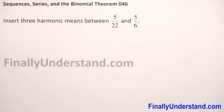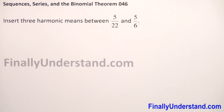Why? Because a sequence is called a harmonic progression if the reciprocals of each term form an arithmetic progression. We don't have a formula for the nth term of a harmonic progression, so that's why we use the definition of arithmetic progression.